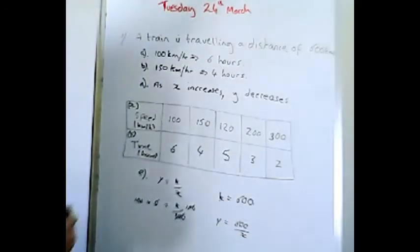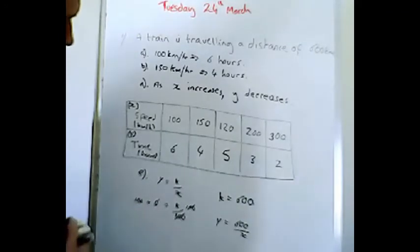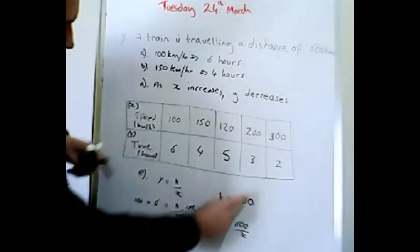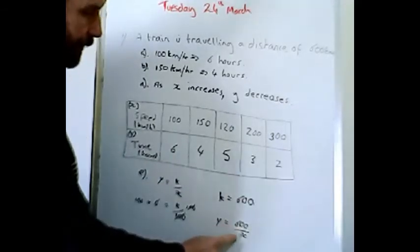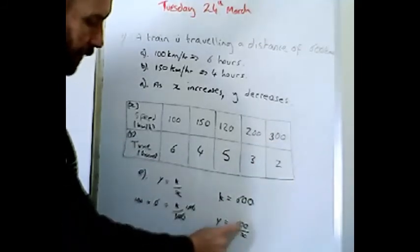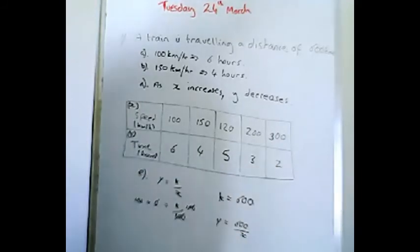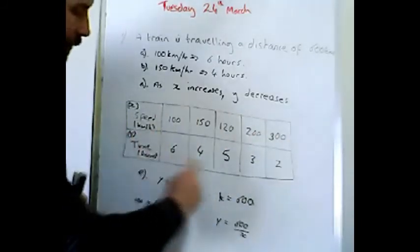Right, and we can check that out here. If we have the easiest one to do, y equals 600 divided by x. So here our x value is 300, so 600 divided by 300 equals 2. Right, so that's our equation.